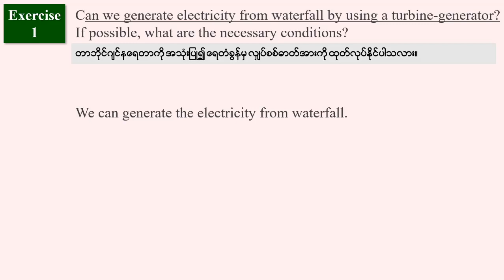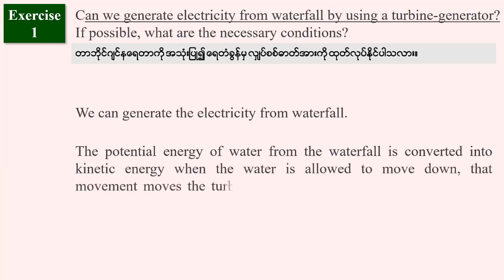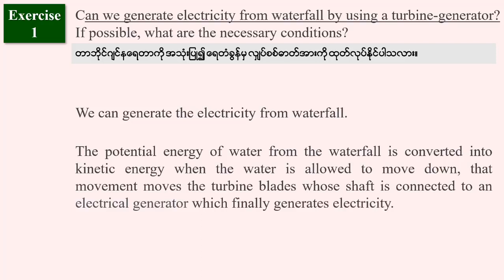We can generate electricity from water in a watershed area. The potential energy of water from the waterfall is converted into kinetic energy when the water is allowed to move down. That movement moves the turbine blades, whose shaft is connected to an electric generator which finally generates electricity.